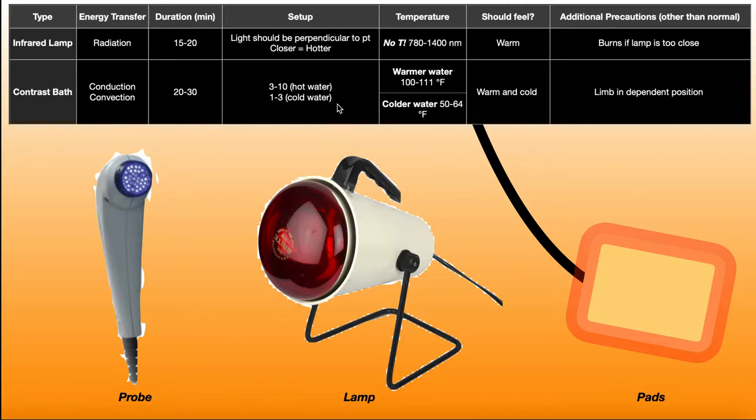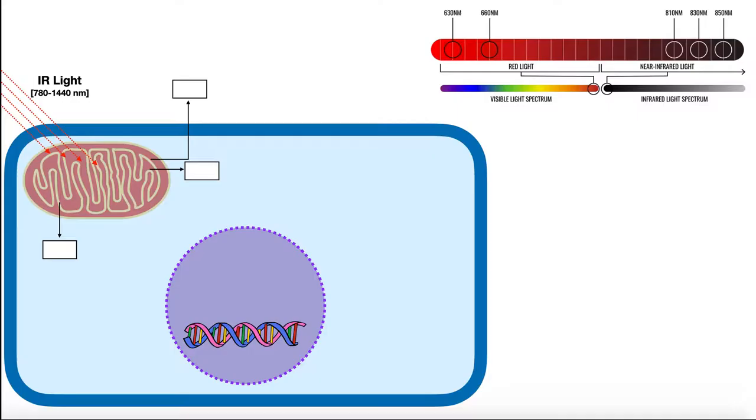Now there are several methods to deliver infrared light. You can use an infrared lamp, which you shine on the skin at a certain distance away. You can use infrared light pads, which you put directly on the skin, or you can use an infrared probe, which you move along the skin and it delivers the light. We'll talk about these three techniques in more detail in just a little bit, but before we do that, I want to talk about how infrared light therapy actually works.